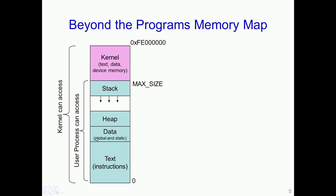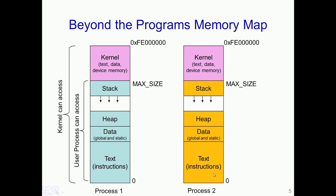What happens when we actually have multiple processes running in the same system? Each process would have its own memory map with its own instructions, data, heap, and stack, and also the kernel component is present beyond the max size. Every process in the system would have the kernel starting at max size and extending beyond. The kernel part is the same for every process executing in the system, while the region below max size varies from one process to another.